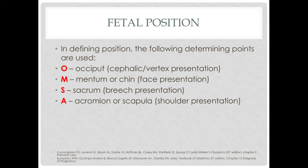That covers the case where the fetus is in a cephalic — particularly occiput — presentation. If the fetus is in a different presentation, the markers change. For a face presentation, your marker will be the mentum or the chin. If the baby is in a breech presentation, then your marker will be the sacrum. If the baby is in a shoulder presentation, then your marker will be the acromion or the scapula.